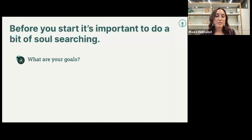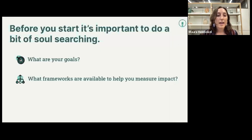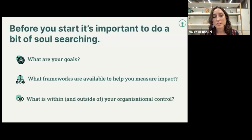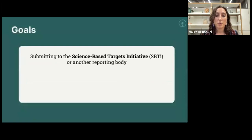The three questions to set you off on the right foot are: first, what are your goals — why are you measuring your food's environmental impacts? Second, what frameworks are available to help you measure impact — what are you measuring in order to achieve your goals? And third, what is inside and outside of your organizational control — how are you going to measure what you set out, and what data do you already have or will need to ask for?